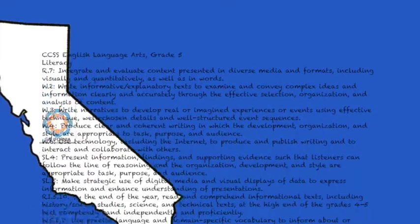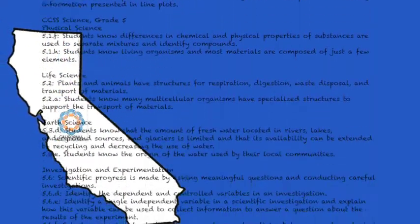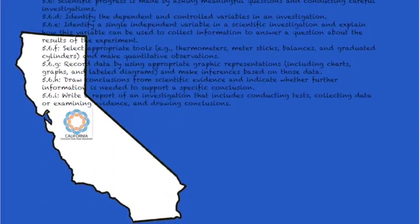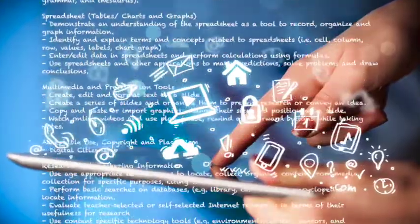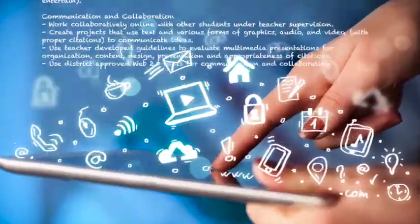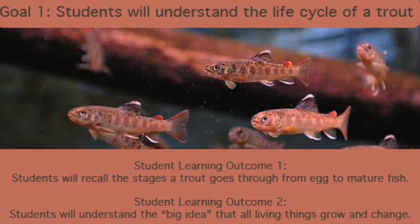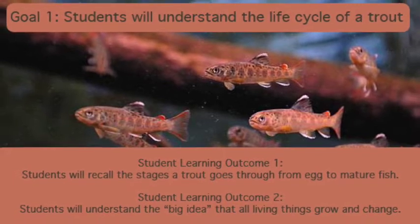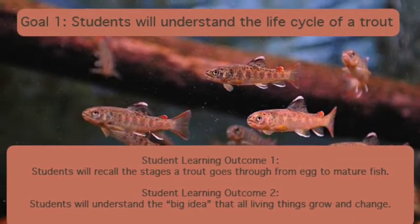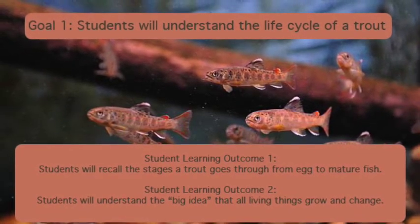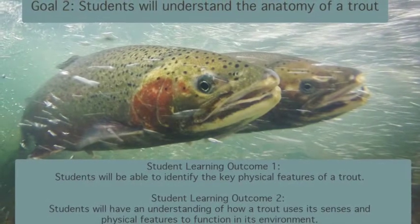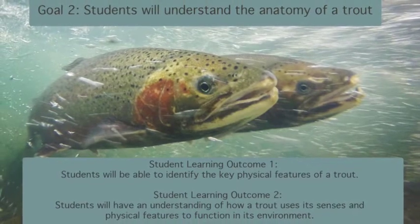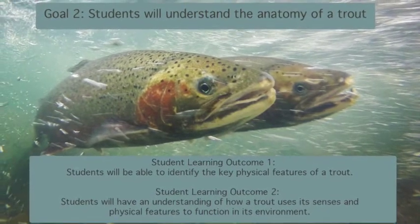Having a deeper understanding and fostering a sense of stewardship for the planet is important for students of all ages. A variety of standards will be addressed during this unit, including the California State Standards for language arts, math, and science, as well as technology standards from the International Society for Technology in Education. There are two primary goals: for students to understand the life cycle of a trout, and to understand the anatomy of a trout, including the use of its senses and physical features to function in its environment.